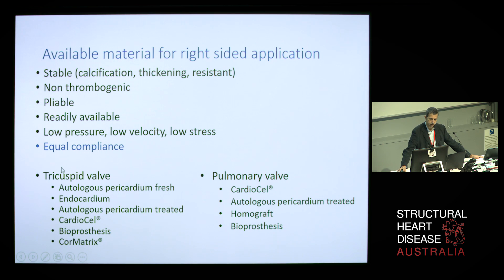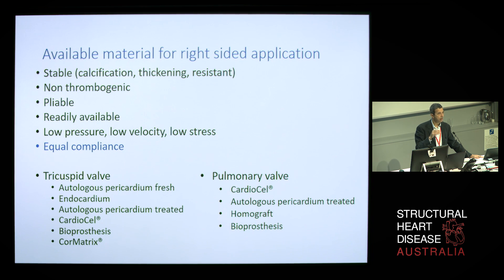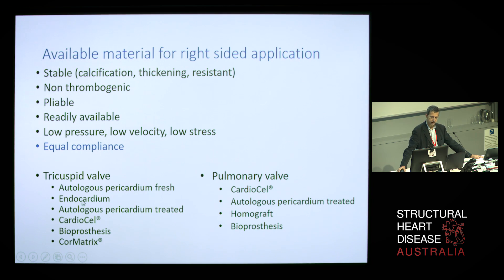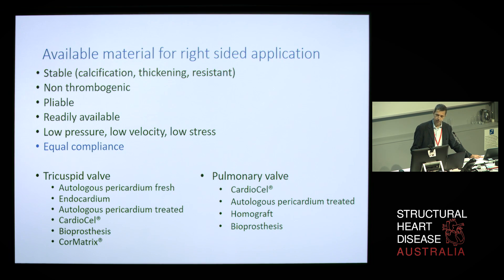In that range, the most important is the equal compliance. If you have very thin, very flexible valvular tissue, you need to use a patch that will be very thin and very flexible. Not a lot of patches would have that. In particular, the Dacron, the CorMatrix, and the autologous pericardium treated are much more rigid than the autologous pericardium fresh, and much more than the endocardium of the right ventricle that we use for the Ebstein anomaly.